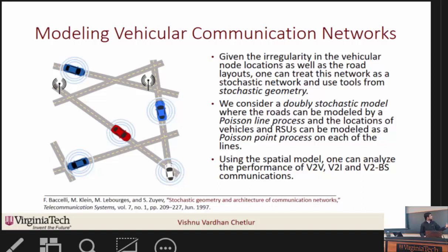There is a certain irregularity associated with both the layout of the roads and the locations of nodes on each road. One can treat this as a stochastic network and use tools from stochastic geometry to model it. We will discuss a doubly stochastic spatial model, where we model the roads as a Poisson line process and the locations of nodes — vehicles and RSUs — as a Poisson point process on each of those lines. Using this spatial model, we can analyze V2V, V2I, and vehicle-to-base-station communications.